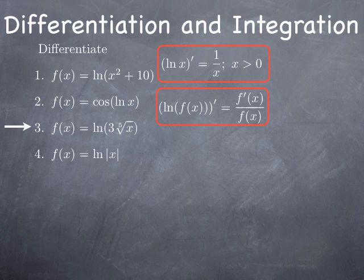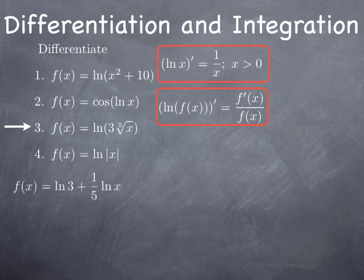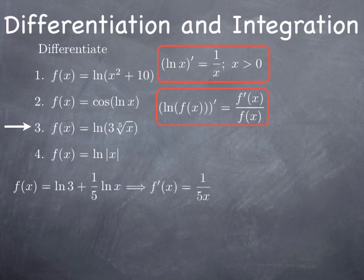For the third example, we want the derivative of ln(3·⁵√x). Rather than applying the chain rule directly, it's easier to simplify first. We write ln(3·⁵√x) = ln(3) + ln(x^(1/5)) = ln(3) + (1/5)·ln(x). Now f(x) = ln(3) + (1/5)·ln(x) is much easier to differentiate: the derivative of ln(3) is zero, so we just get (1/5)·(1/x) = 1/(5x).